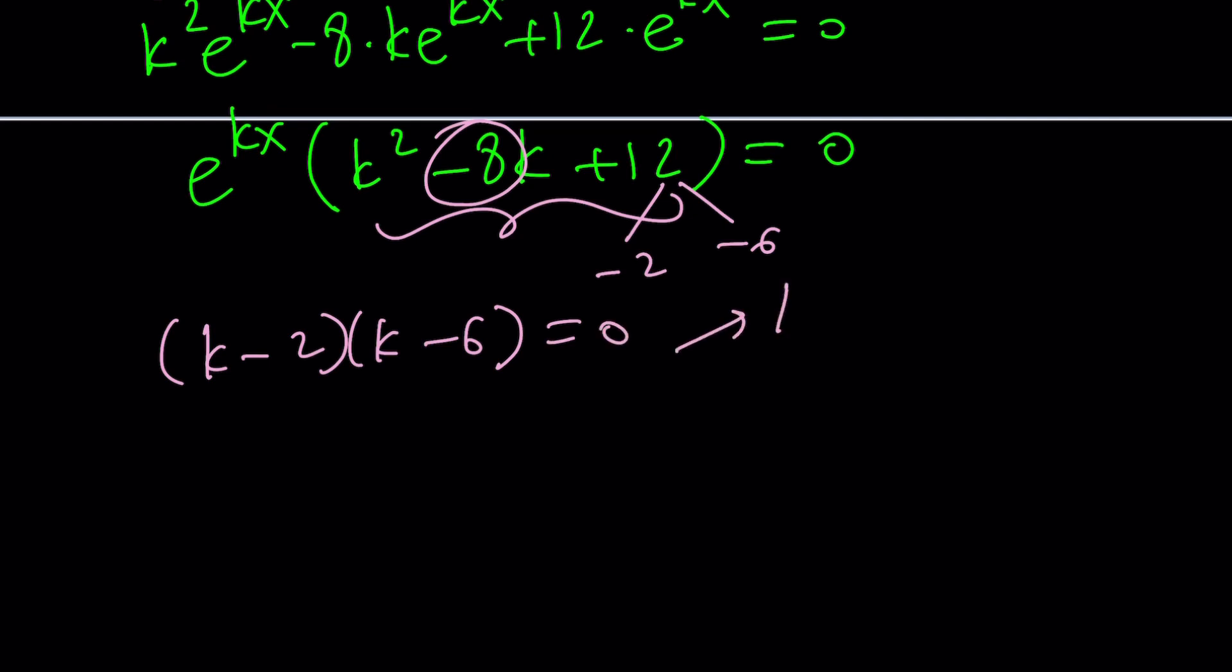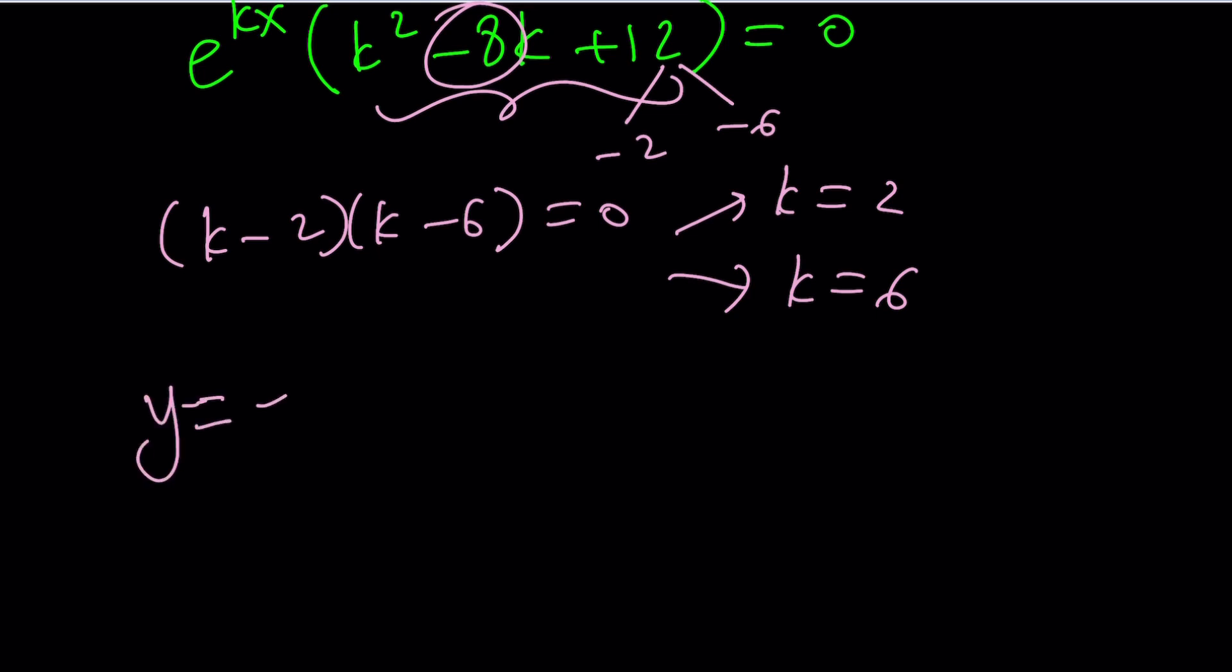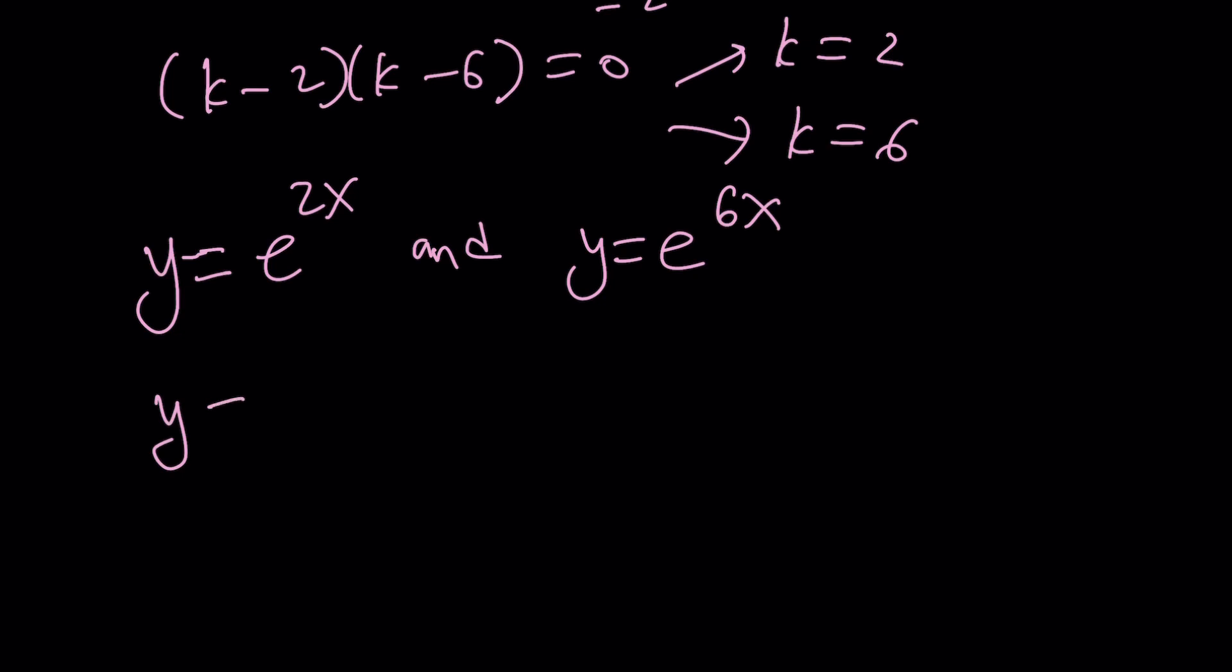From here, we get two solutions. k equals 2 and k equals 6, which means, because we assumed our solution is going to be in this form, y equals e to the kx, y equals e to the power 2x, and y equals e to the power 6x are solutions. And if we have two independent solutions, their linear combination will also be a solution. In other words, if that's the case, we can safely say that c1 times e to the 2x plus c2 times e to the 6x will also be a solution. And this will be a more general solution, because c1 and c2 are arbitrary constants.